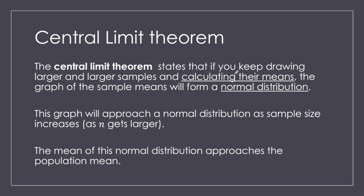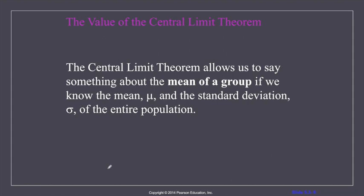The central limit theorem states that if you keep drawing larger and larger samples and calculating their means, the graph of our sample will form a normal distribution. That's what we want — we can work with a normal distribution. The area under a normal distribution is one, and we can use a z-table to determine the area under it. As our sample sizes get bigger and bigger, the graph approaches a normal distribution, and the mean of this distribution approaches our true population mean. The central limit theorem allows us to say something about the mean of a sample if we know the mean of the population and the standard deviation sigma of the entire population.